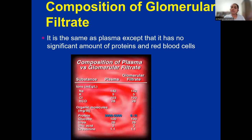The composition of the glomerular filtrate is the same as the plasma, except that it has no significant amount of proteins and red blood cells. The most important two things absent from the glomerular filtrate are proteins and blood cells. When comparing with plasma, which has 3,900 to 5,000 milligrams per deciliter of protein, glomerular filtrate has only 6 to 11 milligrams per deciliter. Red blood cells are usually not seen in the glomerular filtrate — only one or two cells at most.